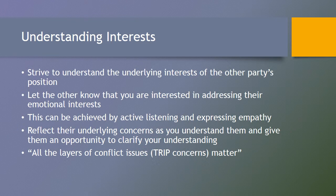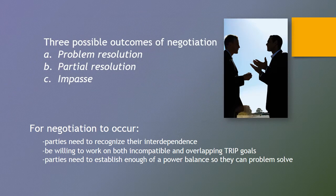Communication is a vital part of negotiation and it always takes one party to act first by being collaborative and unlocking defensiveness. Interpersonal negotiation requires working toward fully understanding the real or underlying interests of the other party's position. Let the other know that you are interested in addressing their emotional concerns or interests — say that you want both of you to be happy with this agreement. Invite concerns through active listening and expressing empathy. Reflect their underlying concerns as you understand them and give them an opportunity to clarify your understanding. Remember the overlapping nature of TRIP concerns — they are always present and can emerge appearing like something else.